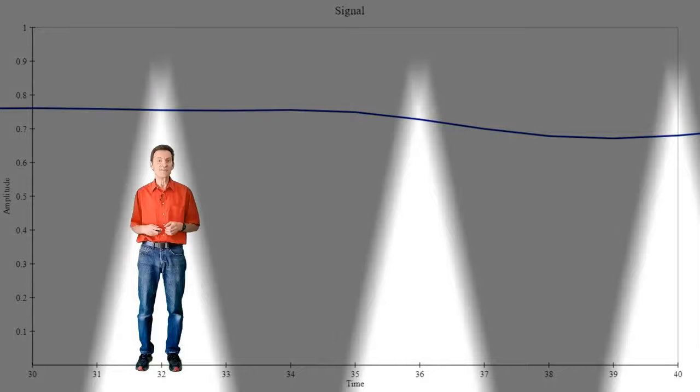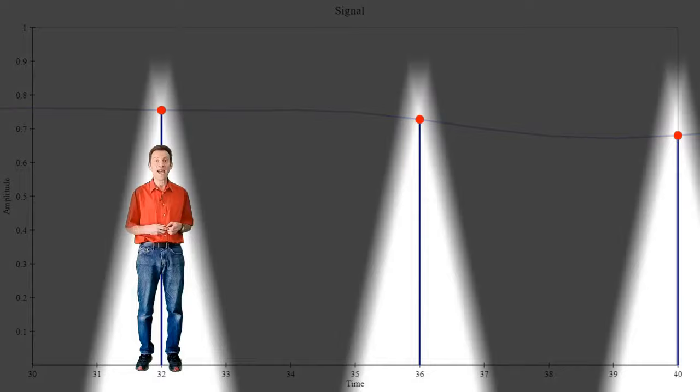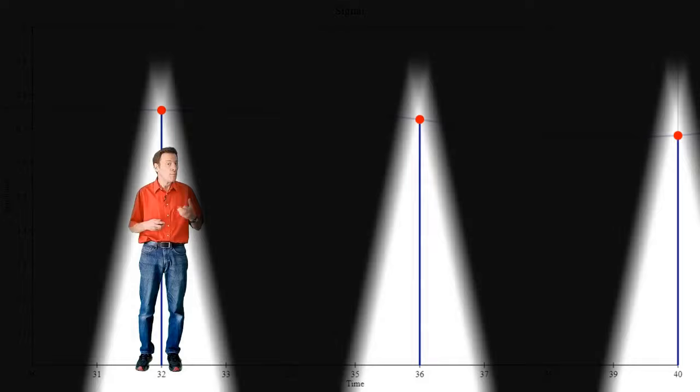The signals it represents are sampled. This means that the information we have about the signal only exists at certain discrete points in time. Between those points, anything could happen.